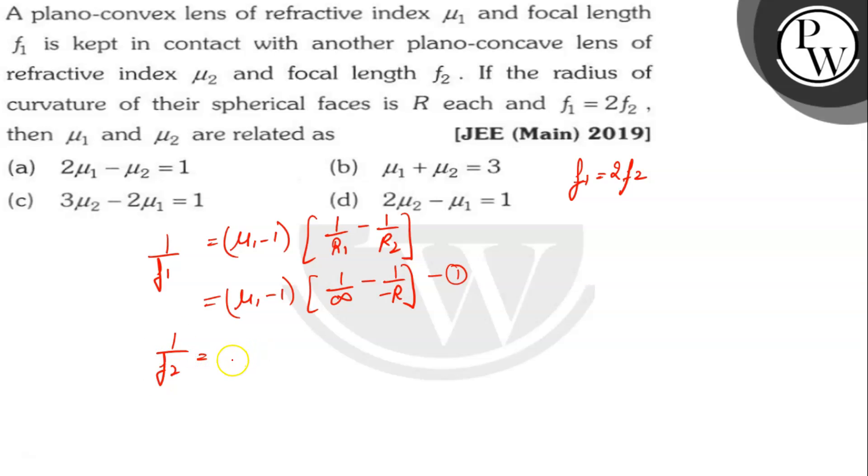Then again, (μ₁ - 1) times (1/infinity - 1/R). Now, if we put values: (μ₁ - 1) times 1/R, so f₁ = R/(μ₁ - 1), and f₂ will be R/(μ₂ - 1).